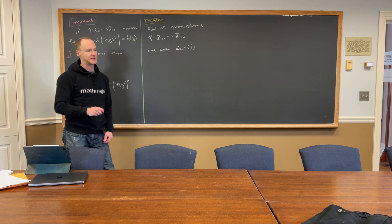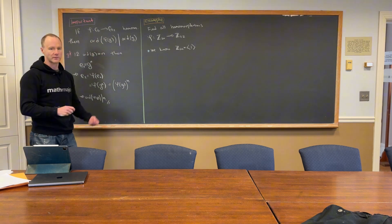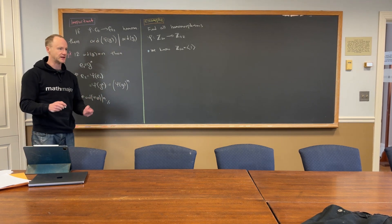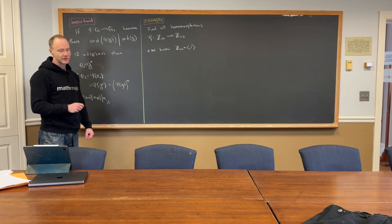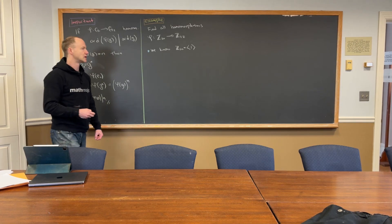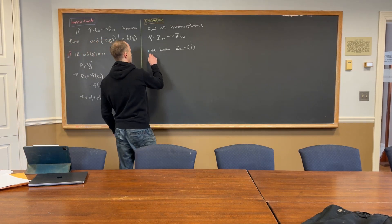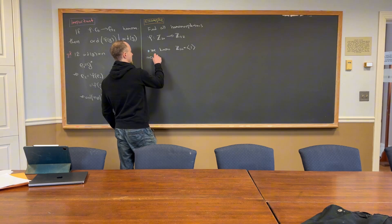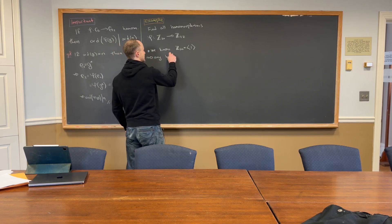It's generated by one with addition, right? So one, one plus one which is two, one plus one plus one which is three, so on and so forth. So we know this is a cyclic group, which means any homomorphism